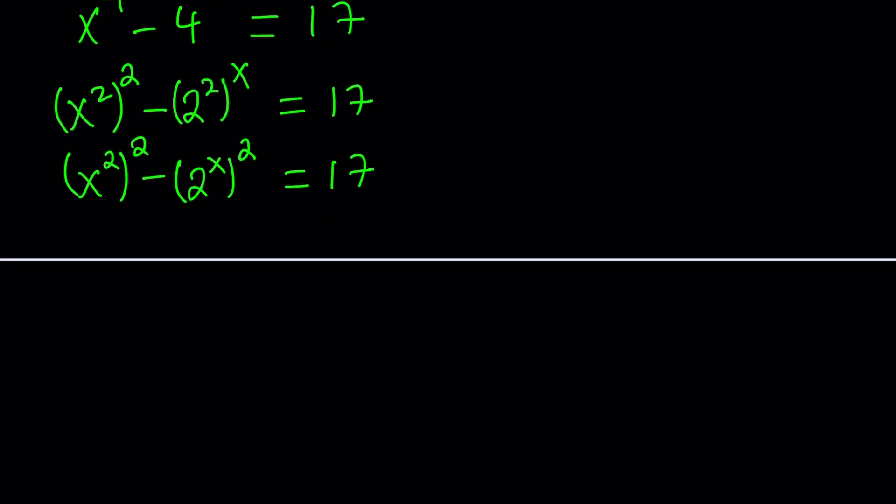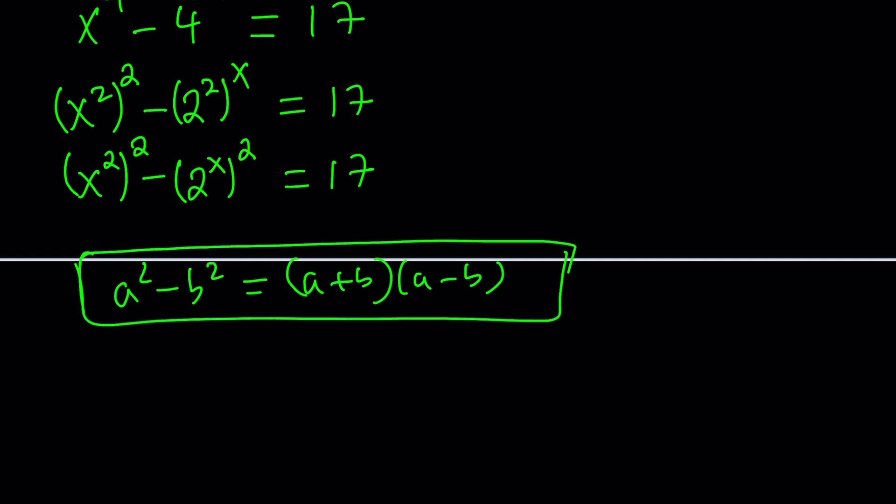So how does that work? a squared minus b squared equals a plus b multiplied by a minus b. For those of you who are not familiar with difference of two squares, that's what it is. Not everybody knows it.